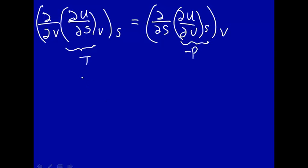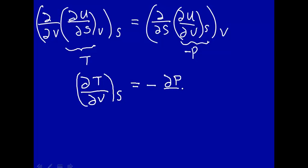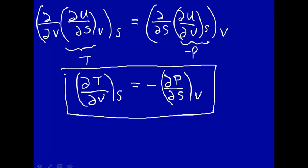So what Maxwell realized: how temperature changes with volume at constant s — we substitute in the expression for temperature. How temperature changes with volume at constant entropy equals minus how pressure changes with entropy at constant volume. This is a Maxwell relation, and that's something you wouldn't think of first-hand. It's useful because if you want to know how pressure changes with entropy, it's hard to change entropy — but that equals minus how temperature changes with volume at constant entropy.